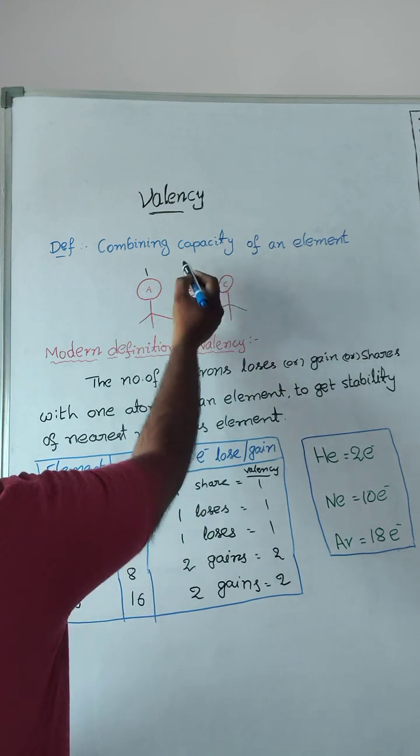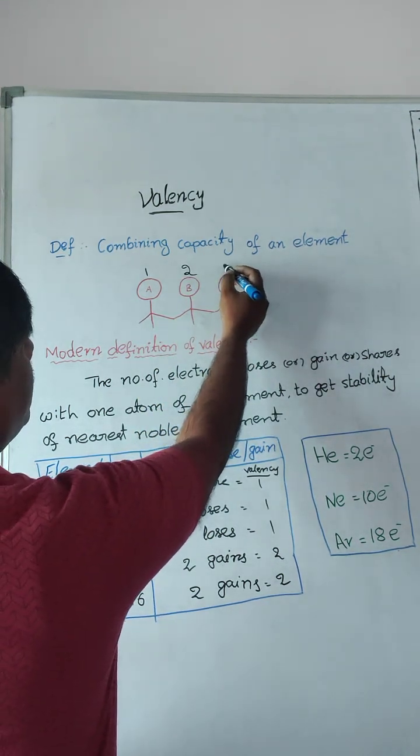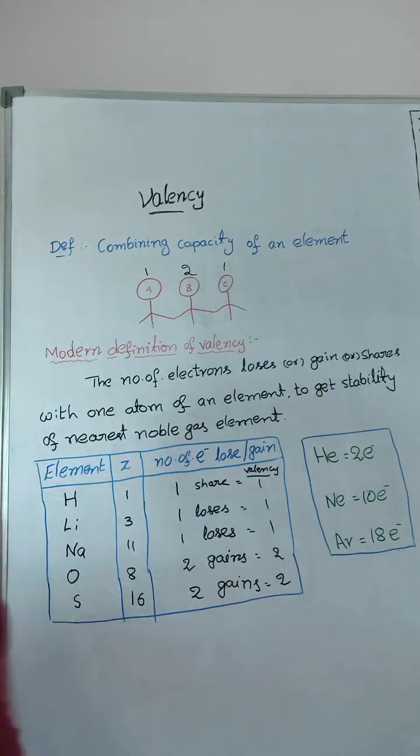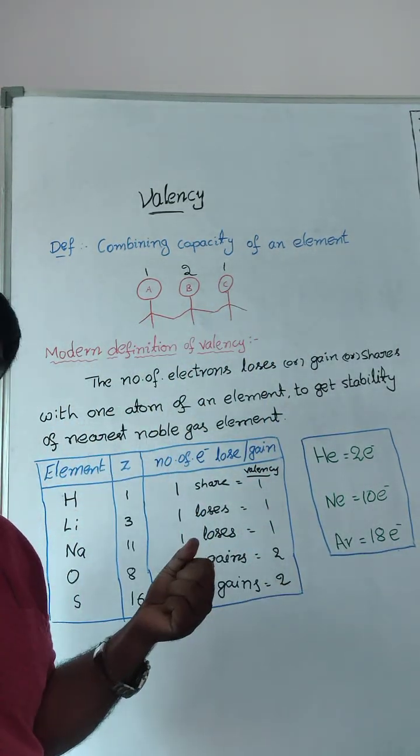Second person holding both sides. So his combining capacity is two. Third person, one. So it is nothing but combining capacity of an element called valency.